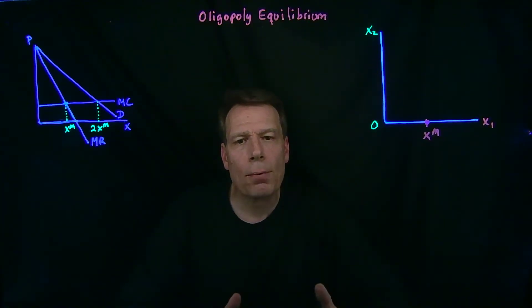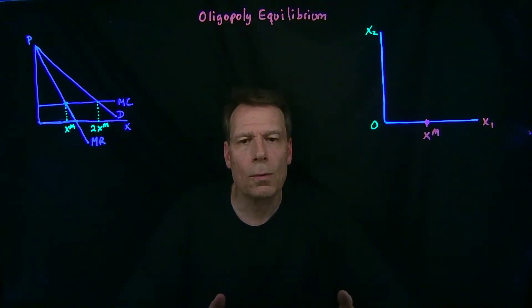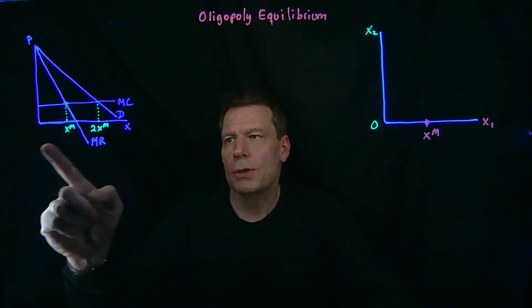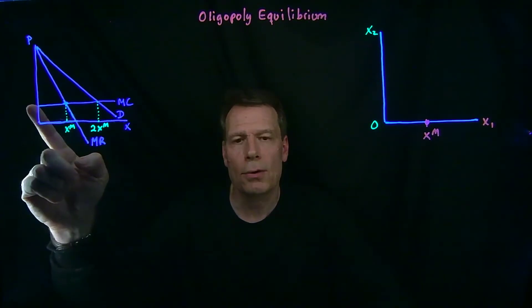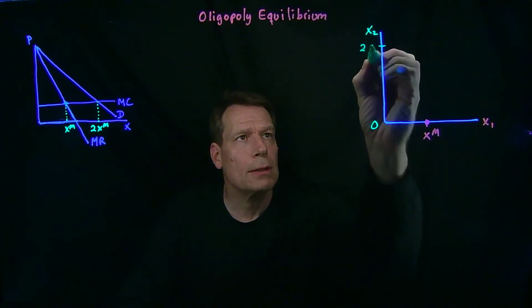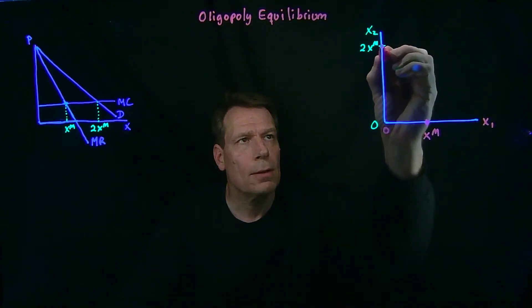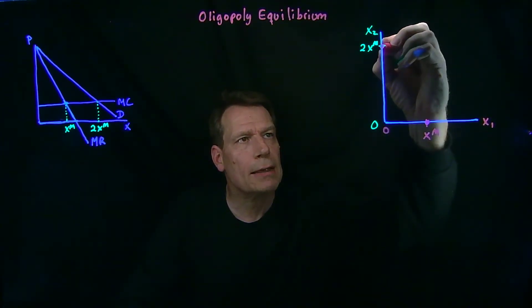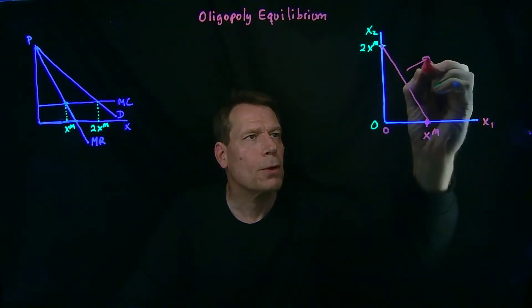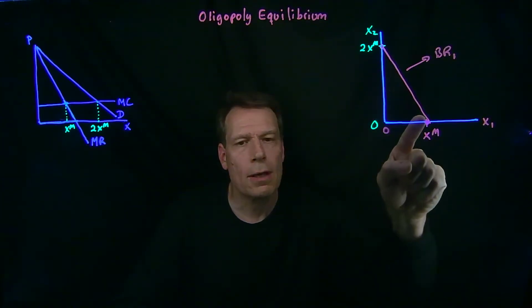Then we can ask: at what point will firm 1 choose not to produce at all? If firm 2 produces so much that price has fallen to marginal cost, then there's no more room for firm 1. If firm 1 produced anything, it would drive price below marginal cost, and then firm 1 would make a loss. So if firm 2 produces twice the monopoly quantity, it will have driven price down to marginal cost, and firm 1's best response is to produce 0. This is a second point on firm 1's best response function, and we can connect these to get the function that tells us for any quantity firm 2 produces what firm 1's best response quantity is.